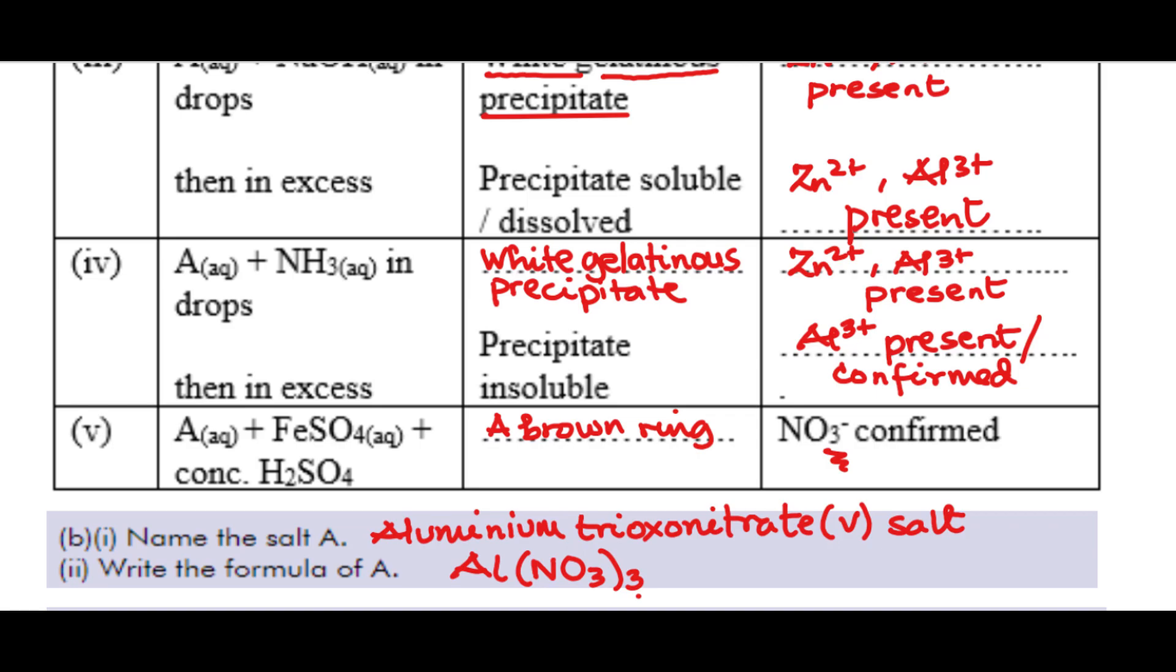Let me explain once again. We have aluminum ion and the trioxonitrate 5 ion. Aluminum has a valency of 3. Trioxonitrate 5 has a valency of 1. So, with the exchange of radicals, you will have Al(NO3)3. So, remember 1 will always be invisible. So that gives us that formula Al(NO3)3.